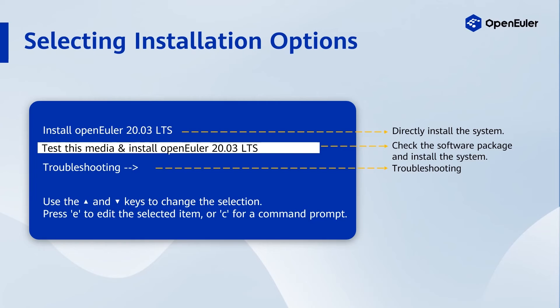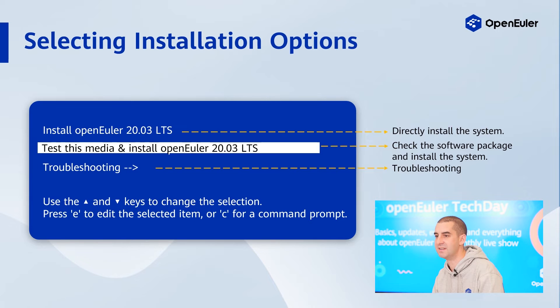Can you show us how this process works? Of course. I'll use Open Euler 20.03 LTS and the virtual DVD-ROM drive as an example to show you how to install this OS step-by-step. On the installation page, you'll want to select an installation option. There are three options: directly install the OS, check the software package and install the system, or view troubleshooting information. Select the option that's best for your situation. Here we've selected 'Test this media and install Open Euler 20.03 LTS'.